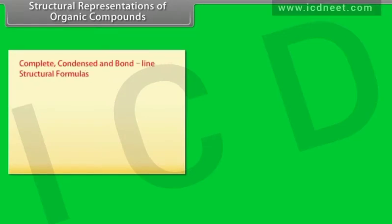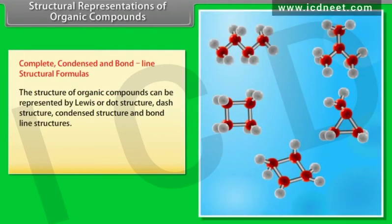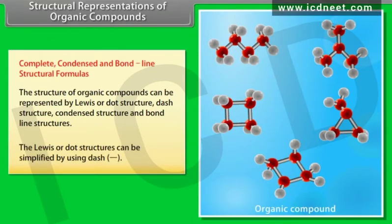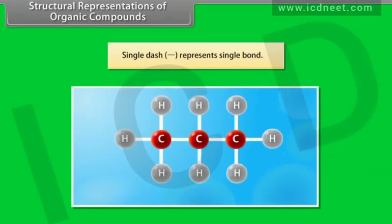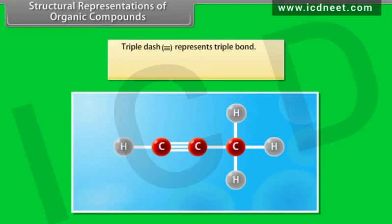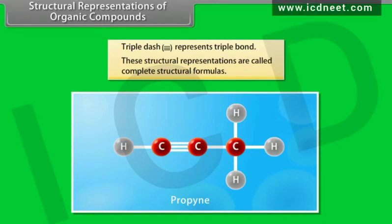The structure of organic compounds can be represented by Lewis or dot structure, dash structure, condensed structure, and bond line structures. The Lewis or dot structures can be simplified by using dashes: a single dash represents a single bond (e.g., propane), a double dash represents a double bond (e.g., propene), and a triple dash represents a triple bond (e.g., propyne). These structural representations are called complete structural formulas.